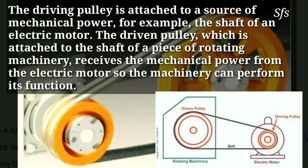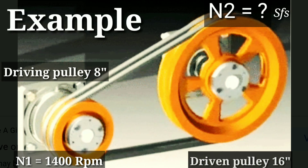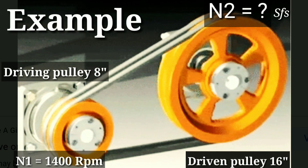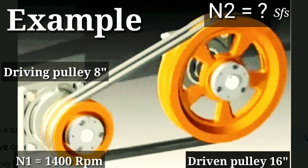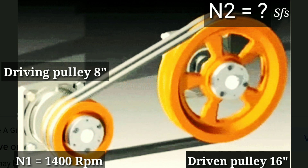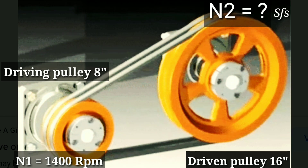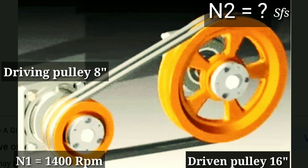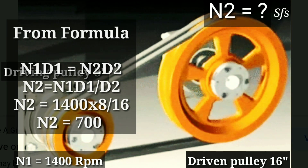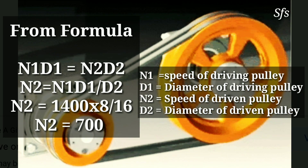Power is transmitted from the driving to the driven pulley with the help of a belt. The driving pulley size is 8 inches and its speed N1 is 1400 RPM — in a motor, the RPM is always given. N2 is the speed of the driven pulley, and the size of the driven pulley is 16 inches. We have to calculate N2 using the formula: N1 × D1 = N2 × D2.